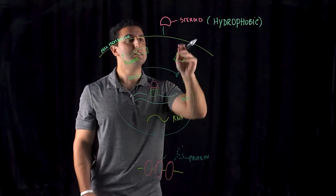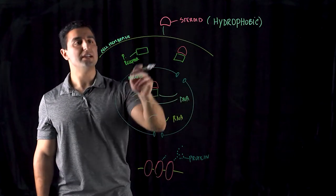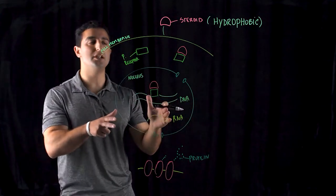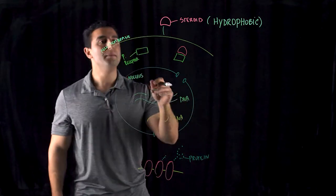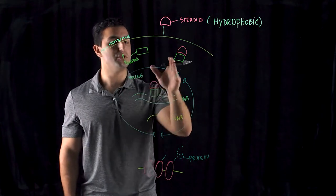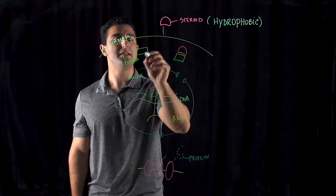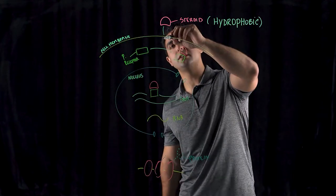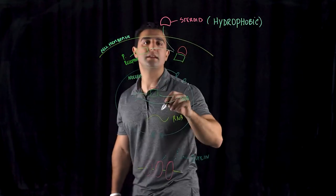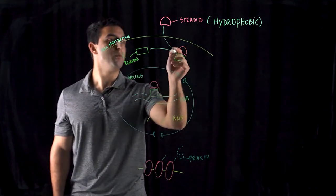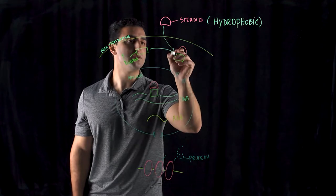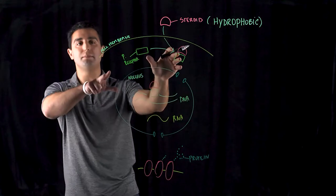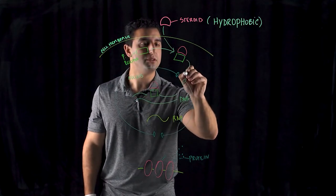And so what happens is whenever the steroid enters the cytosol, it wants to enter the nucleus in order to have some kind of direct gene activation. It must bind to a protein receptor in order to bypass through the nucleus. So what happens here, there's a protein receptor that comes in and binds to the steroids and creates this receptor protein hormone complex. Now, because of this protein receptor, this can bypass through the nucleus.